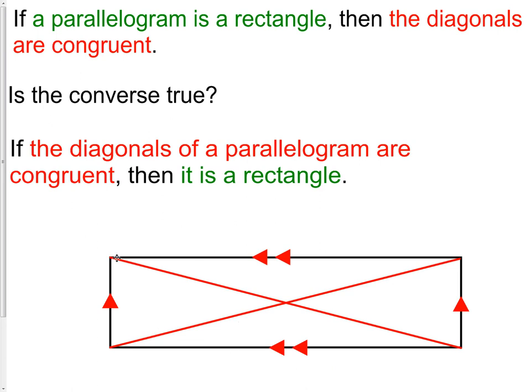When the diagonals are congruent, it has to be a parallelogram. And it has to be a rectangle. So if it's a rectangle, we know the diagonals are congruent. If the diagonals are congruent, we know it has to be a rectangle. These two things are always true.